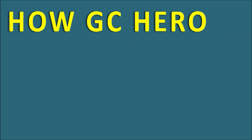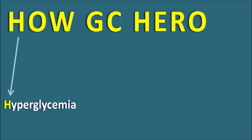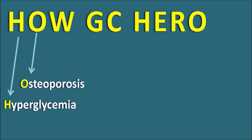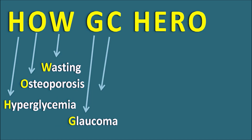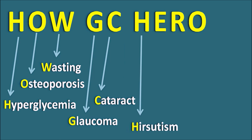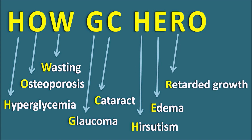Decoding 'HOW GC HERO': H indicates hyperglycemia, O indicates osteoporosis, W indicates wasting, G indicates glaucoma, C indicates cataract, H indicates hirsutism, E indicates edema, R indicates retarded growth, and O indicates oral thrush. These are the important side effects of glucocorticoids, remembered by the code HOW GC IS HERO.